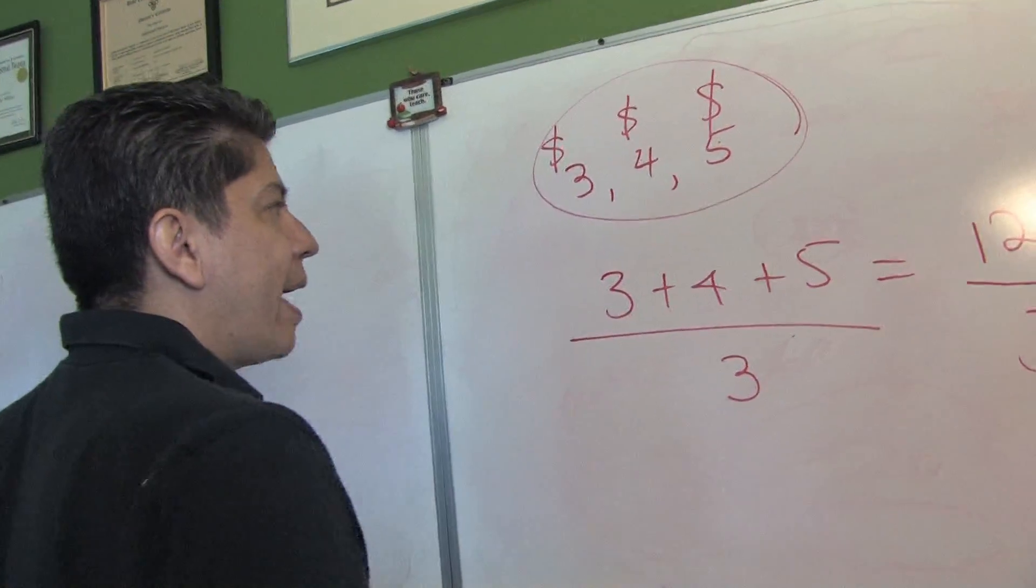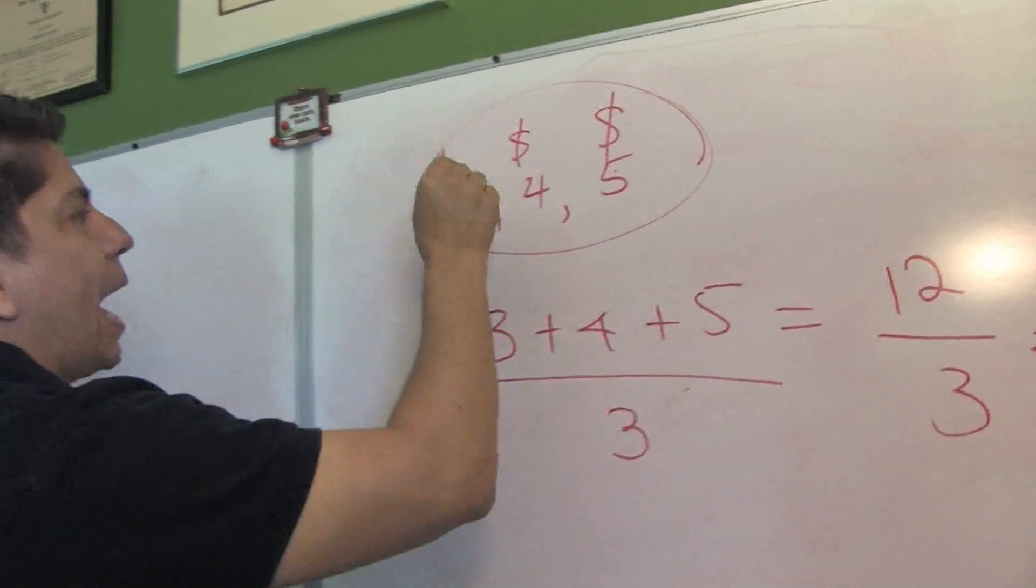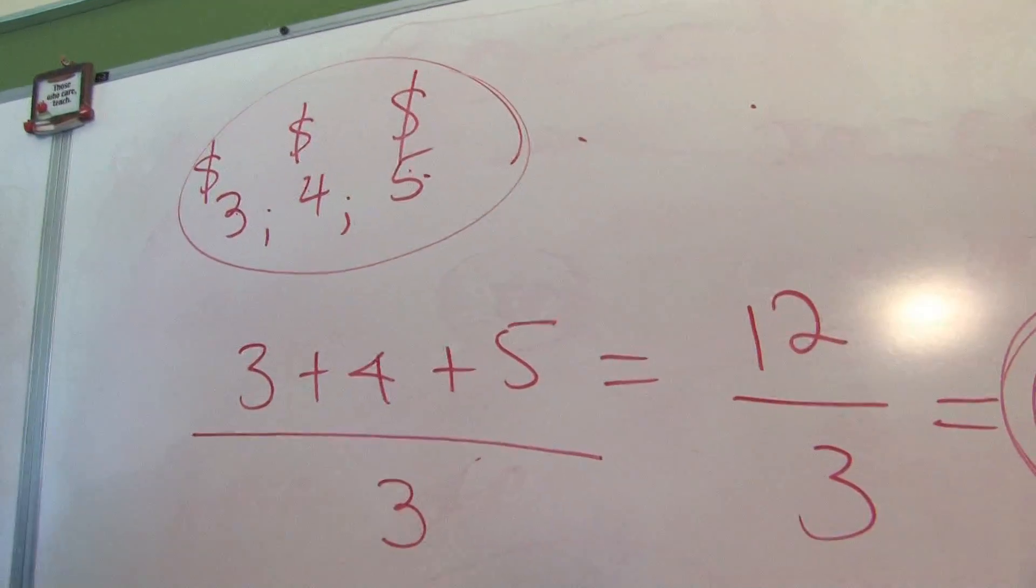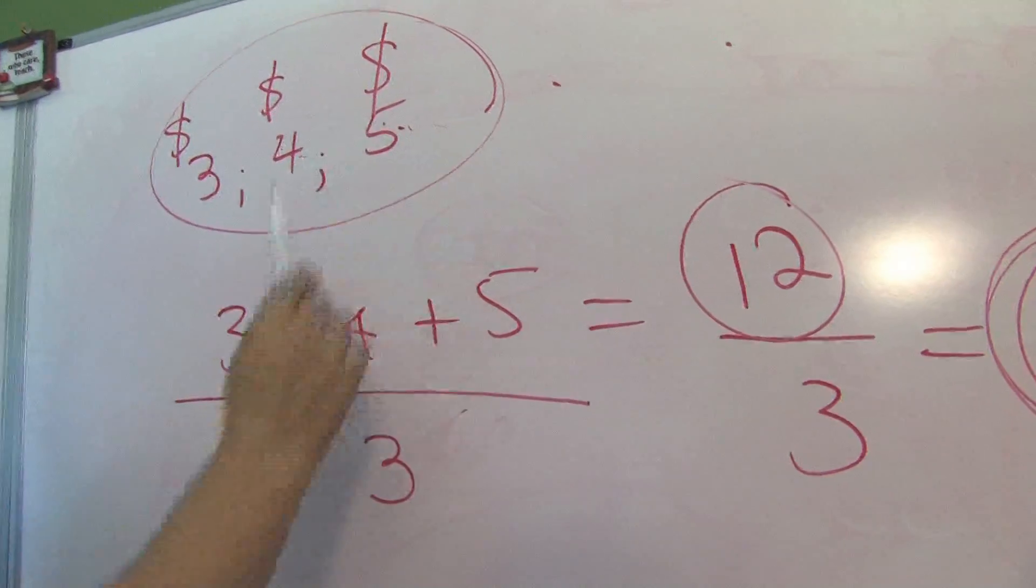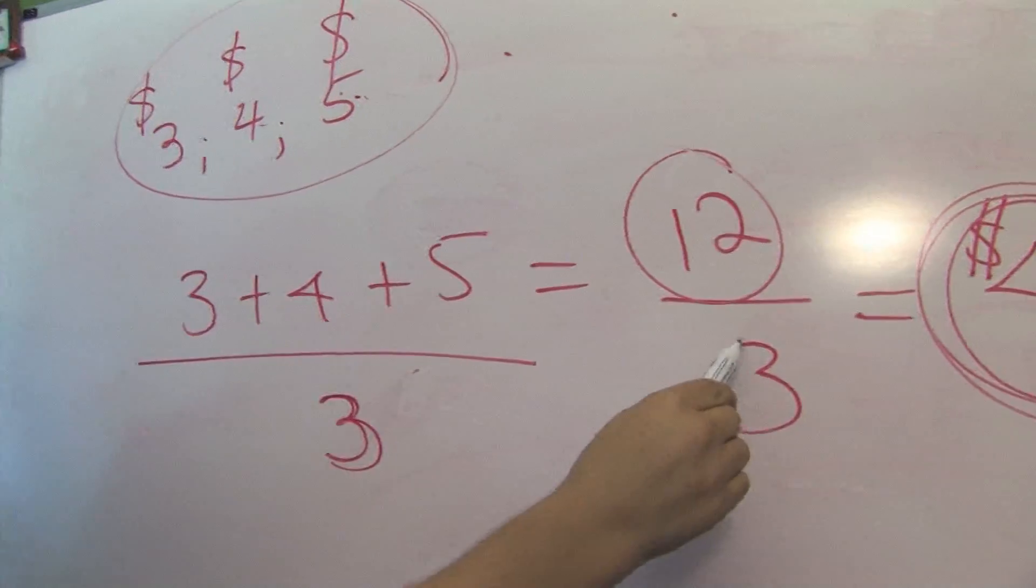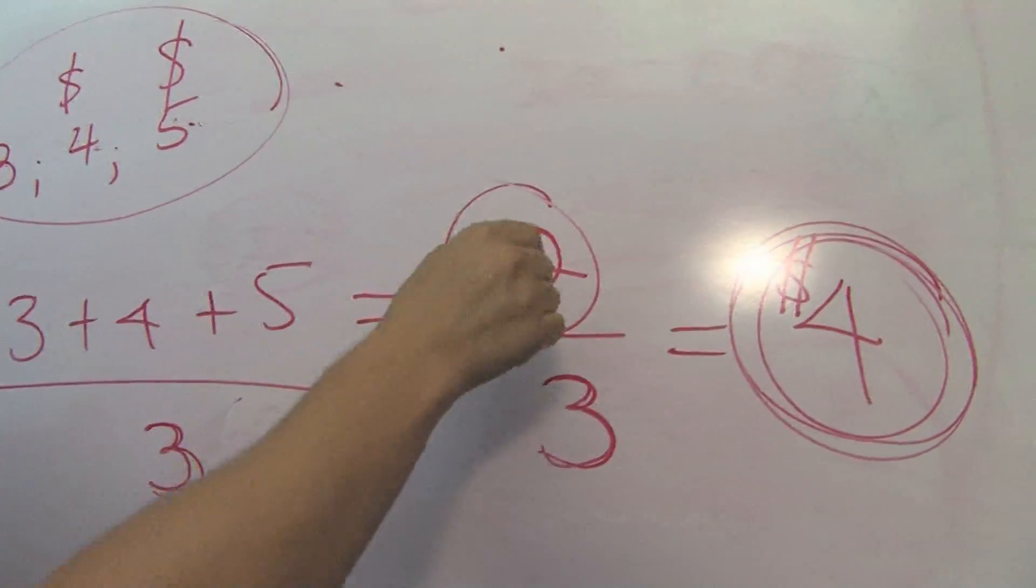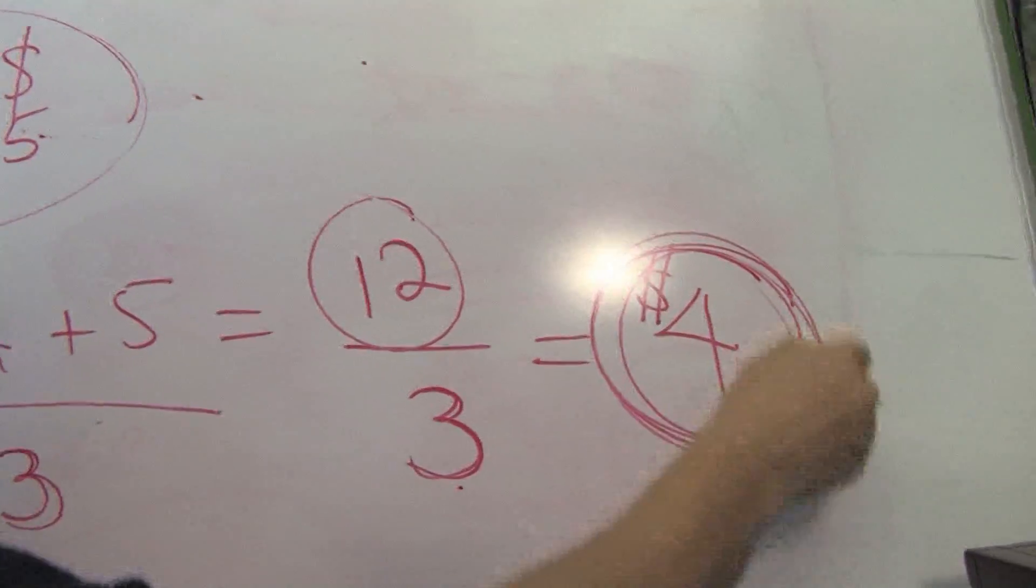So to recap, to get an average, you simply add up all the numbers, get a sum, then count how many numbers you have. In this case, you have 3 numbers. So you divide by 3 and then divide the total sum by 3 and you will get your average.